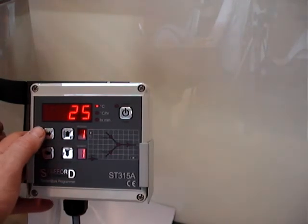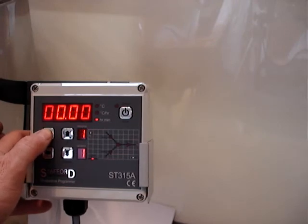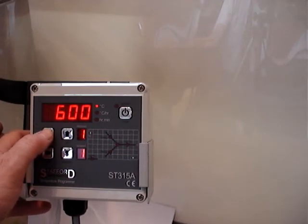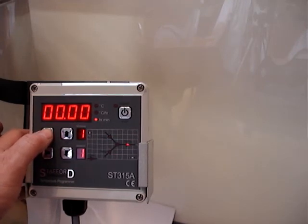So, just to quickly review it, press the arrow to the right, it's program 1. No delay, press again 150 an hour, first set point of 600, no soak.